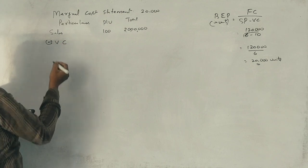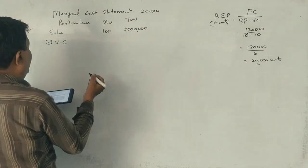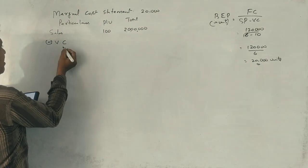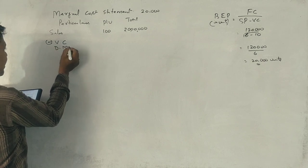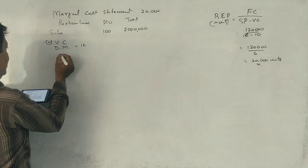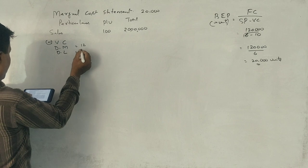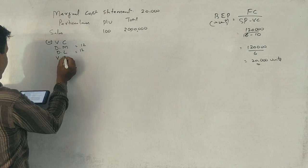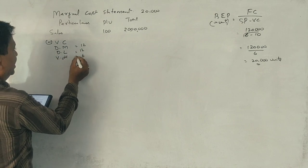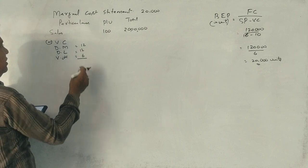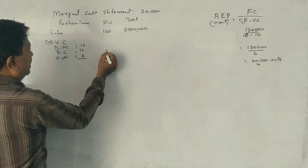Now, variable cost is minus. Variable cost per unit. One direct material is 12 rupees. Direct labor is 12 rupees. Variable overhead is 6 rupees. So total is 12, 24, 30 rupees.